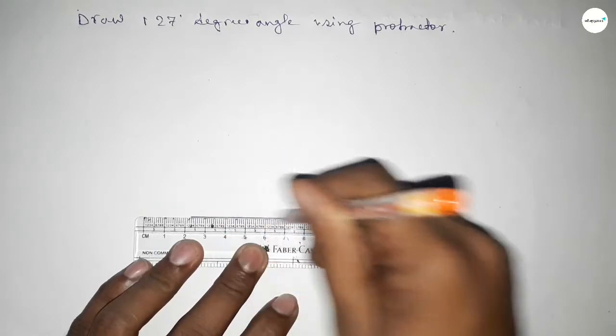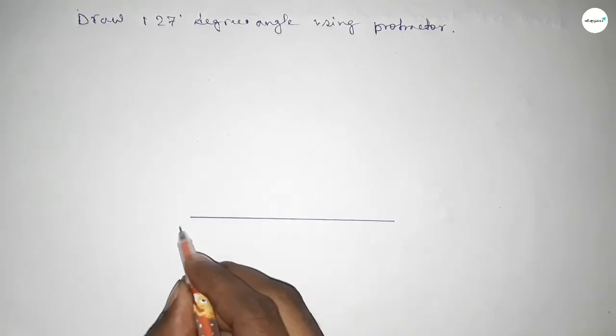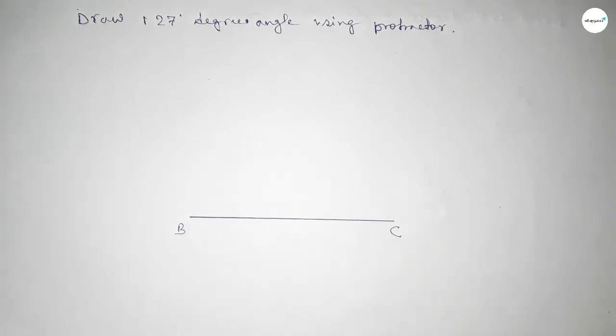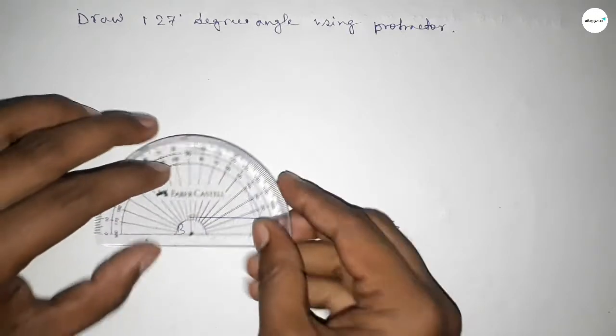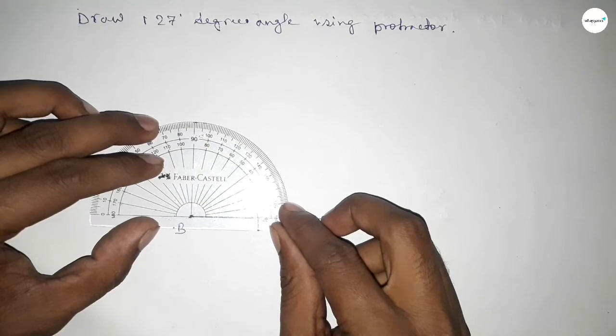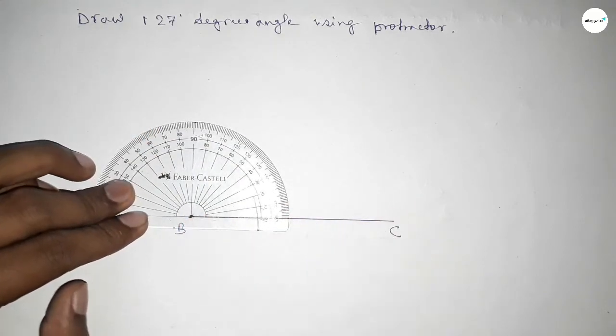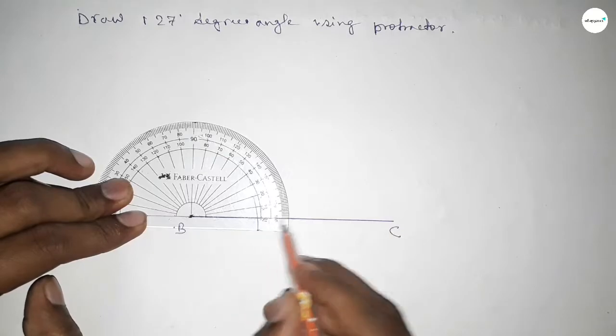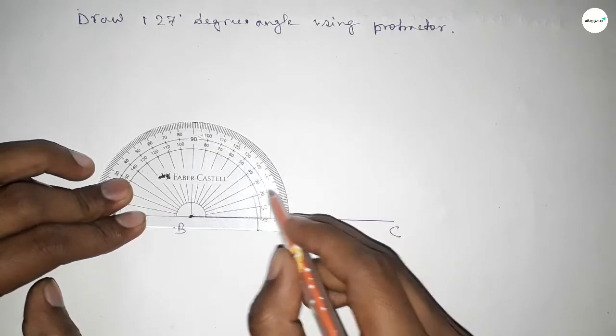Next, taking here B point and here C point. Now putting the protractor on the point B perfectly, then counting the angles. So this is starting angle: 0, 10, 20...